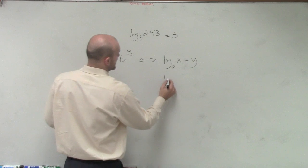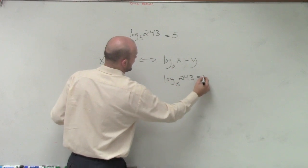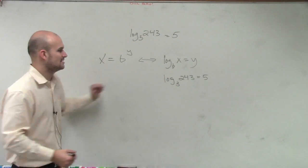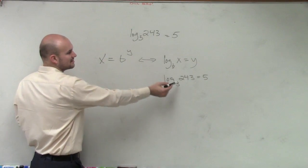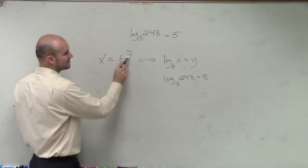So if I have log of 3 of 243 equals 5, all I want you guys to do is now write it into this format. So notice the bases are the same. So we're going to have base 3 raised.